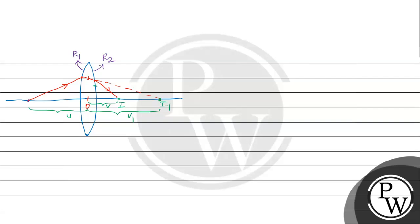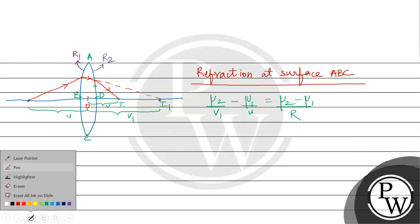With the help of this diagram, for the first surface ABC, we do refraction. The first case is refraction at surface ABC. That will be μ2/v1 - μ1/u = (μ2 - μ1)/R1. This direction is μ2, and this direction is μ1.